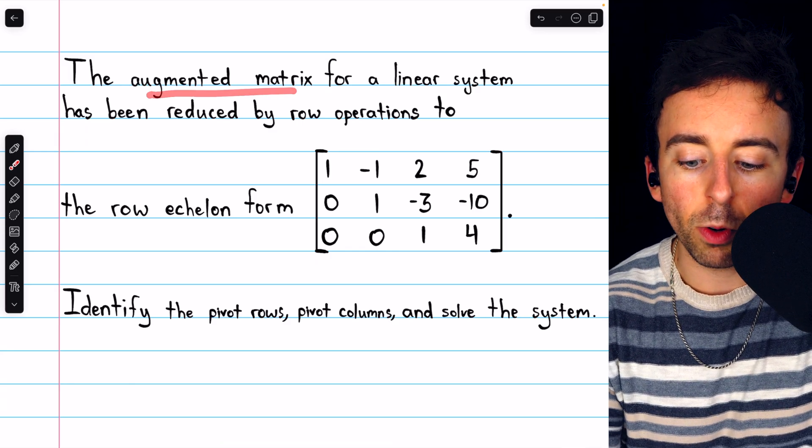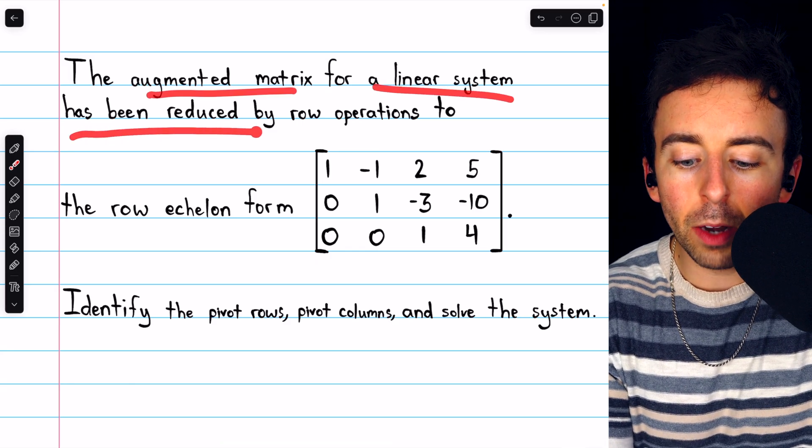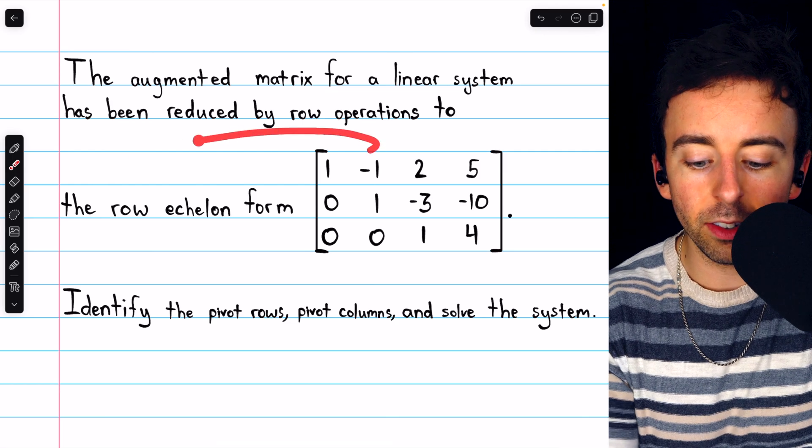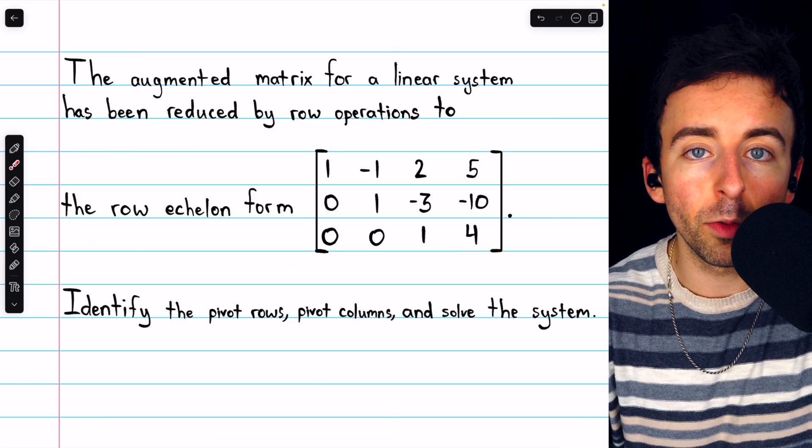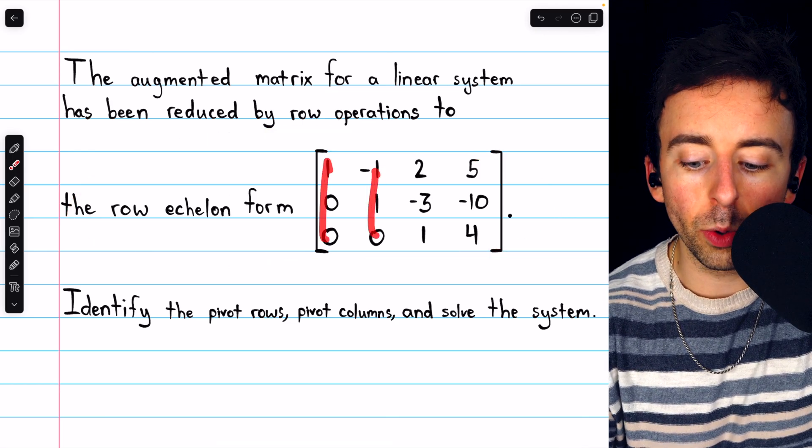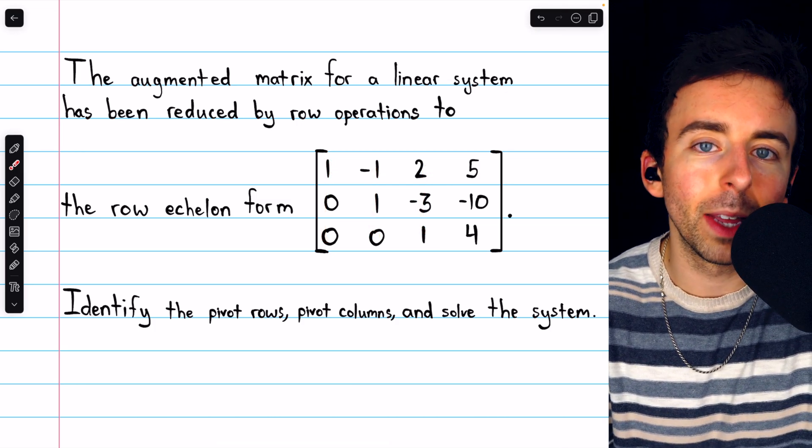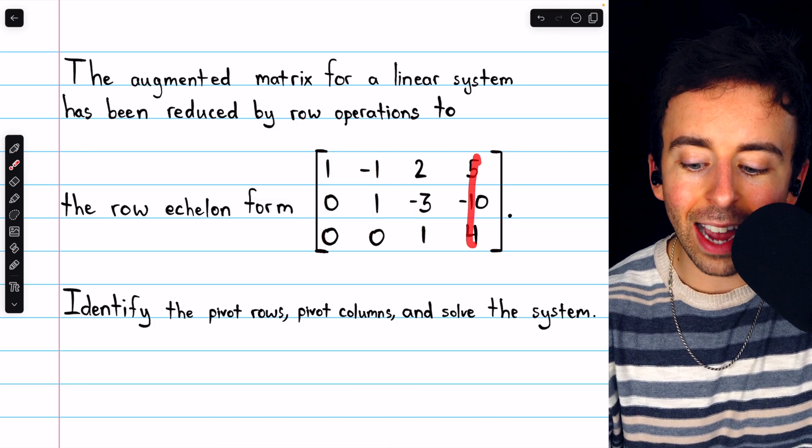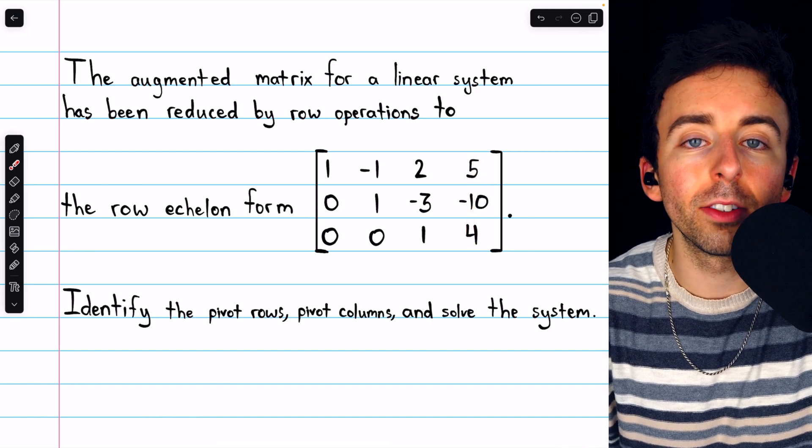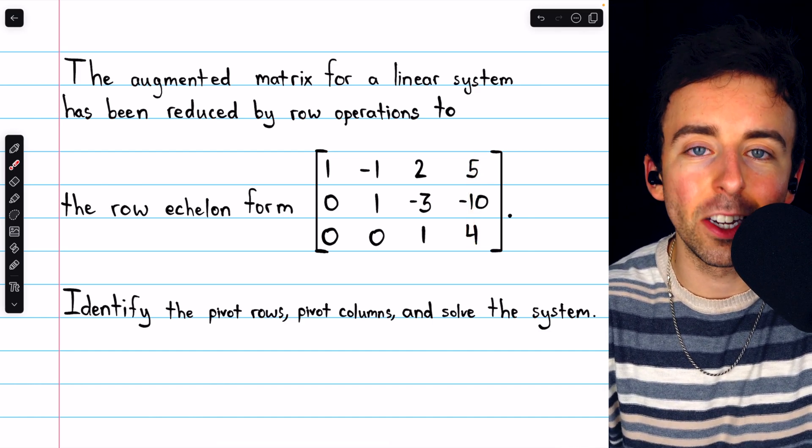Let's suppose the augmented matrix for a linear system has been reduced by row operations to this row echelon form. Columns 1, 2, and 3 correspond to the variables x1, x2, and x3, and then this last column we assume corresponds to the constants in the linear system.